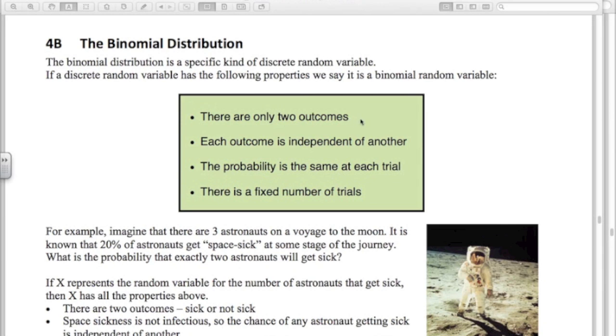If a random variable has only two outcomes, sometimes we call it success and failure. If each outcome is independent of the other, the probability stays the same for each trial, and there is a fixed number of trials, then we can say this random variable has a binomial distribution, and that helps us simplify things.